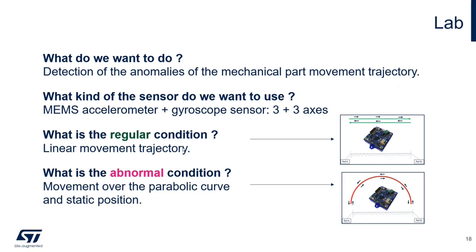For us, the regular condition is a linear movement trajectory — for example, a linear motor in industrial automation. This is one of the solutions. The abnormal condition is movement over a parabolic curve, and static or steady position as well.